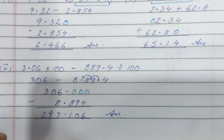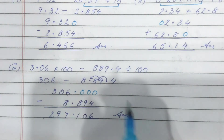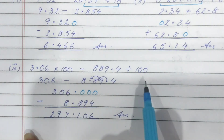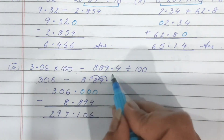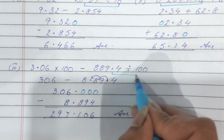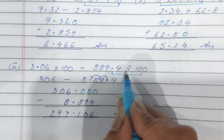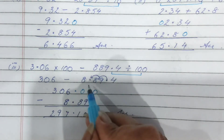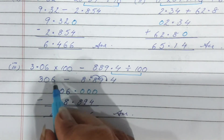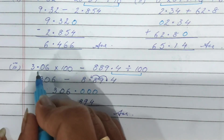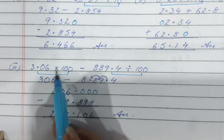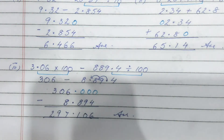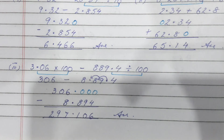Coming to the third sub-part. First you do the division — this part of the question is solved by shifting the decimal back two places. Then multiplication — shifting the decimal in front. Finally, do the subtraction by making like decimals.